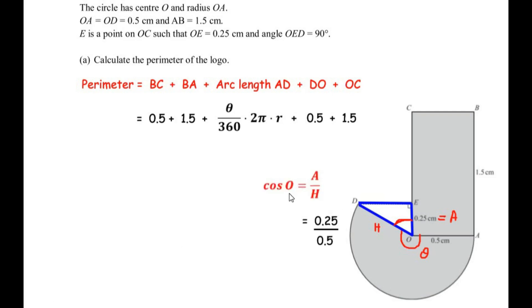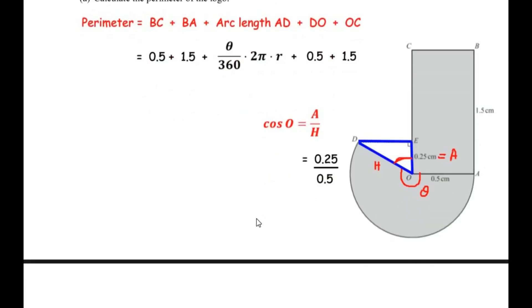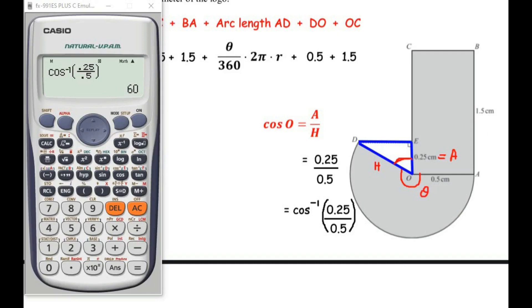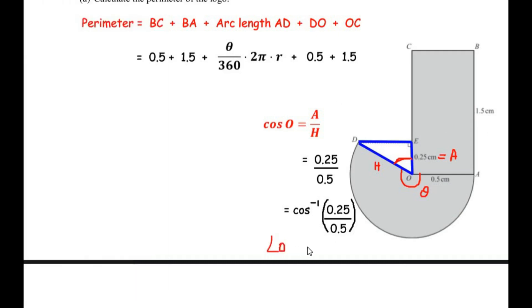Since we have the adjacent and hypotenuse, we use the trigonometric ratio cosine. Cos of angle O equals adjacent divided by hypotenuse, which is 0.25 over 0.5. Taking cos inverse of 0.25 over 0.5 gives us 60 degrees. So angle O is 60 degrees. Since the rectangle contributes a 90-degree angle as well, subtracting 60 and 90 from 360 gives theta as 210 degrees.